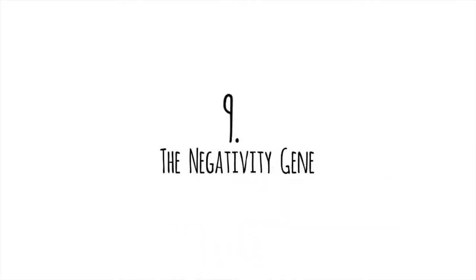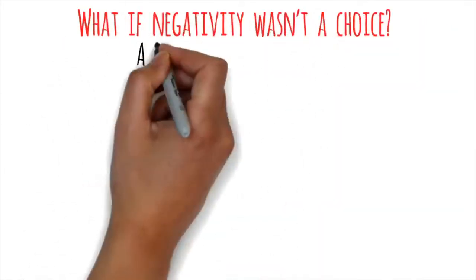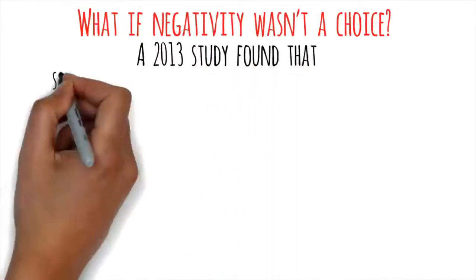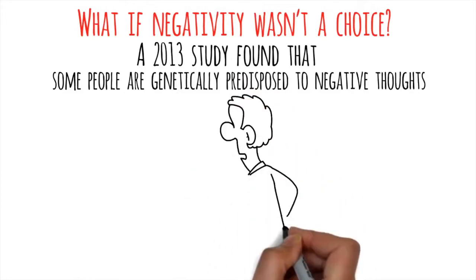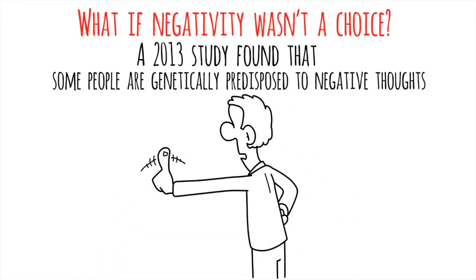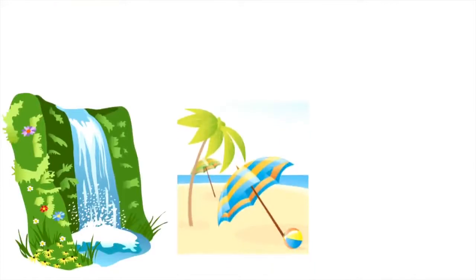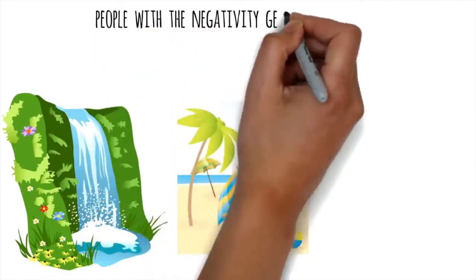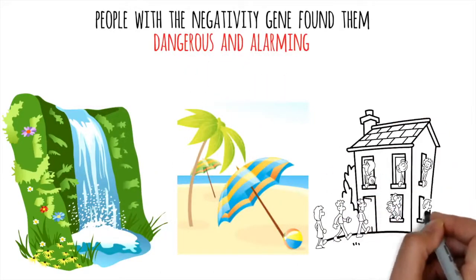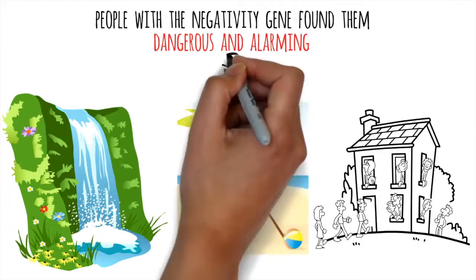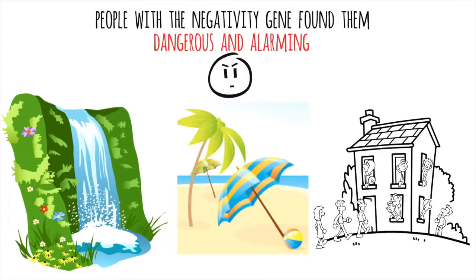The Negativity Gene. What if negativity wasn't a choice? A 2013 study found that some people are genetically predisposed to negative thoughts. This means you automatically react with stronger negative emotions. In that study, researchers looked at how people with this gene reacted to various images. While most people enjoyed pictures of waterfalls and beaches, people with the negativity gene found them dangerous and alarming. When shown a picture of a crowded room, they honed in on angry or sad faces. So, if you're a naturally negative or cautious person, you may have been born that way.